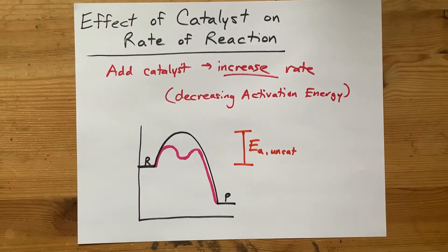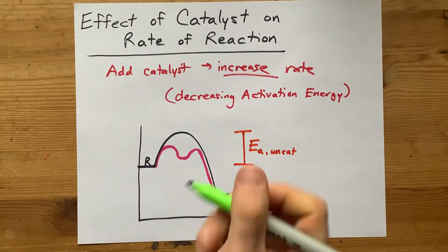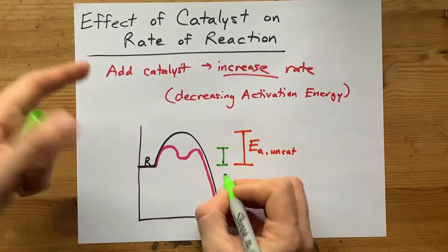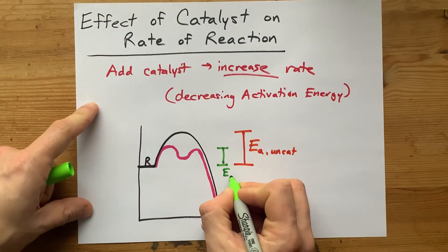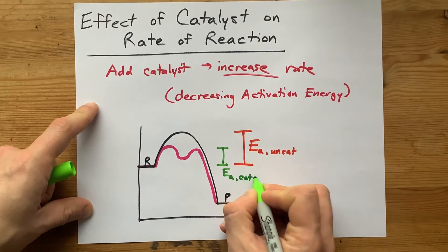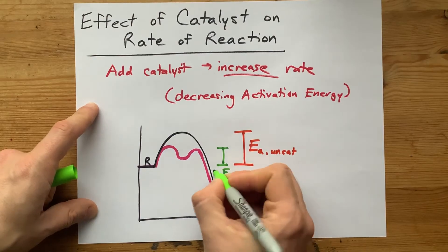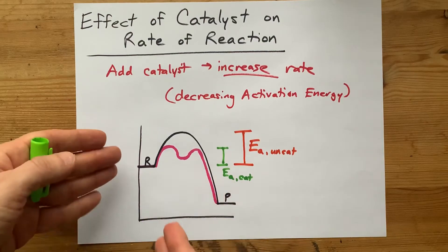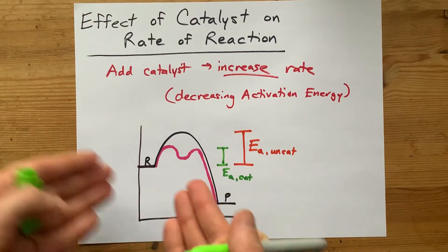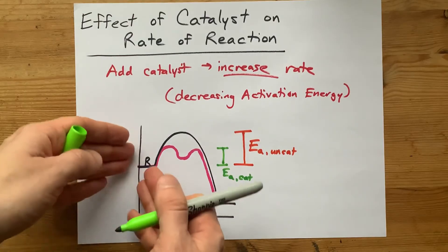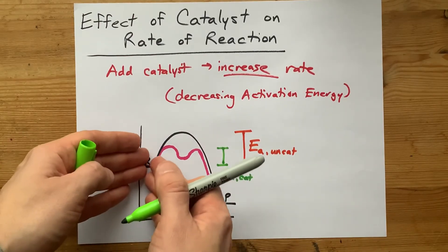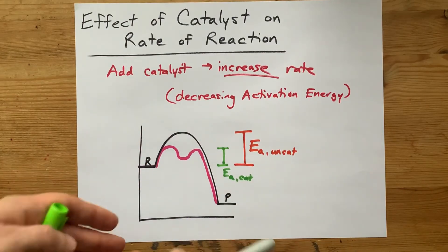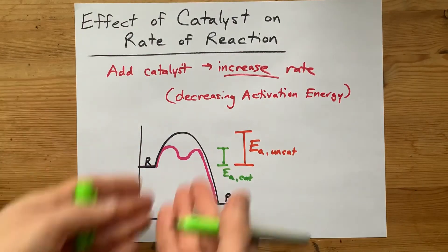Say 70 kilojoules per mole or something. Then for the catalyzed reaction, you started in the same place, but you only had to get up here. Clearly, that is a smaller amount, and so the activation energy for the catalyzed reaction is less than the activation energy for the uncatalyzed one. What that means is that the initial collisions happening to get the ball rolling to turn the reactants into the product are just easier to achieve — so you can make the products faster. That's the effect of the catalyst.